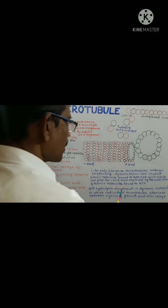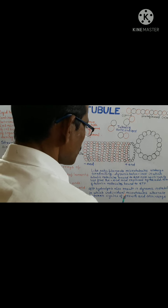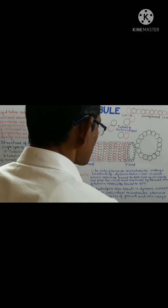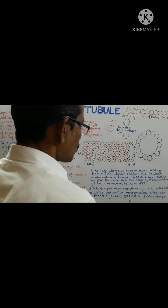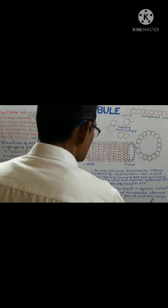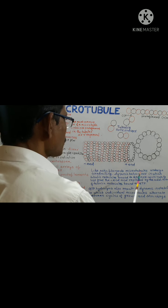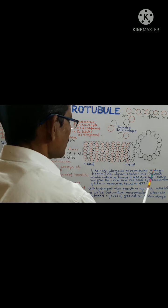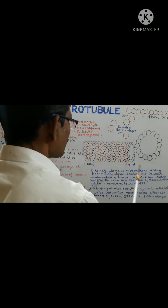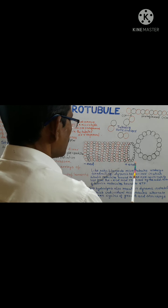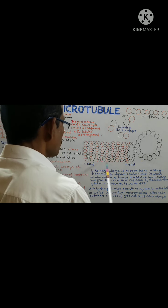GTP hydrolysis also results in dynamic instability — a phenomenon in which individual microtubules alternate between cycles of growth and shrinkage. If the rate of tubulin addition is greater than the rate of GTP hydrolysis, the microtubule will grow. If the rate of GTP hydrolysis is greater than the rate of tubulin addition, the microtubule will shrink.